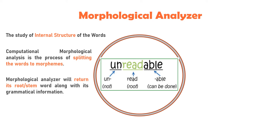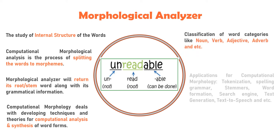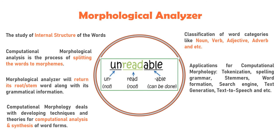Computational morphology deals with developing theories and techniques for computational analysis and synthesis of word forms. It has two stages: the first is analysis, carried out to analyze the input data; and the second is synthesis, for generating the morphological parsing and classification of different word categories.